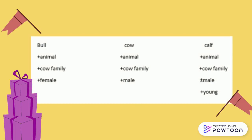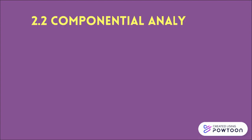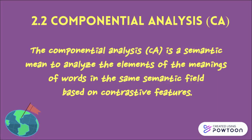Calf refers to a female animal in the cow family, whereas bull is male, and calf can be either a young male or female. Componential Analysis is a semantic method used to analyze the elements of the meanings of words in the same semantic field, based on contrasted features.